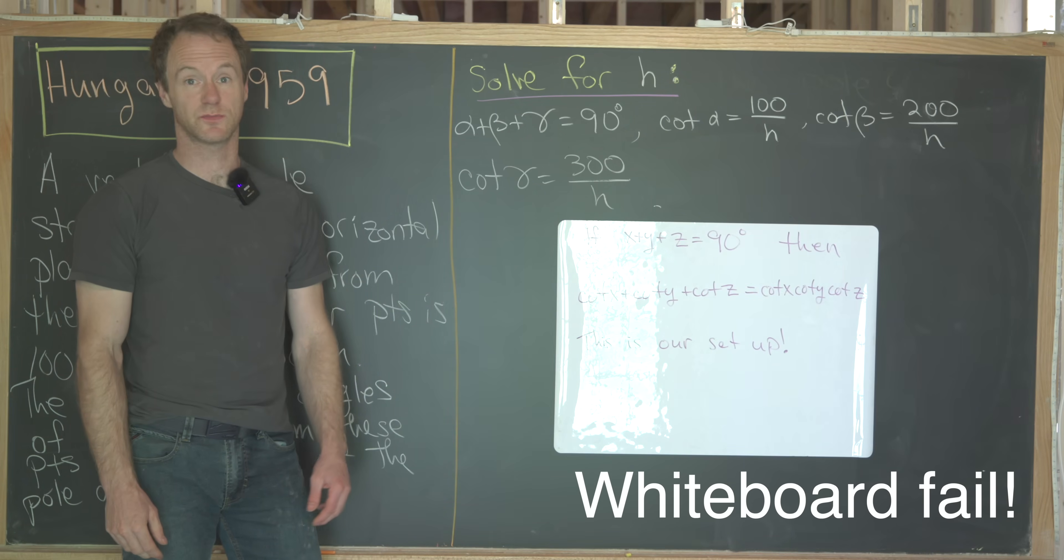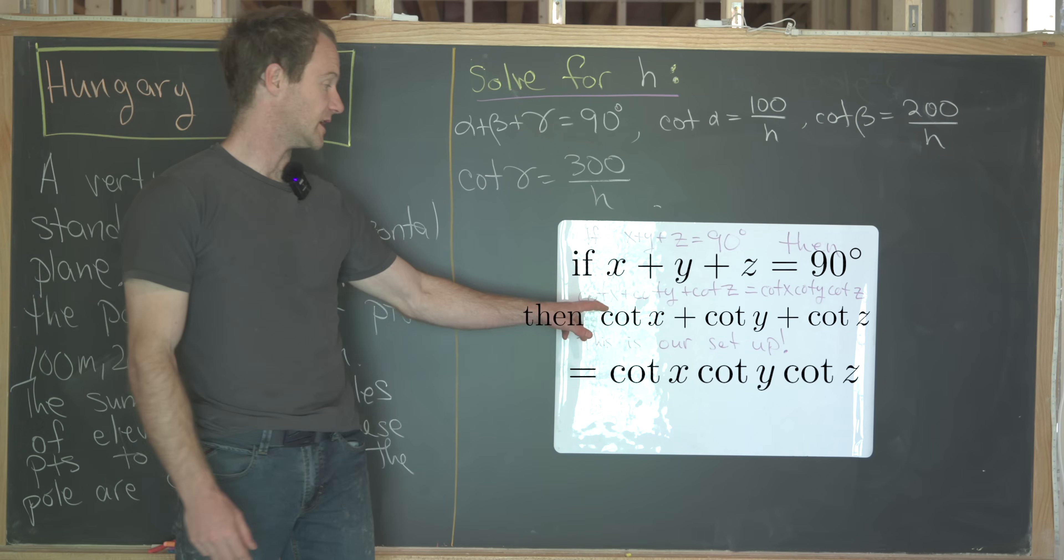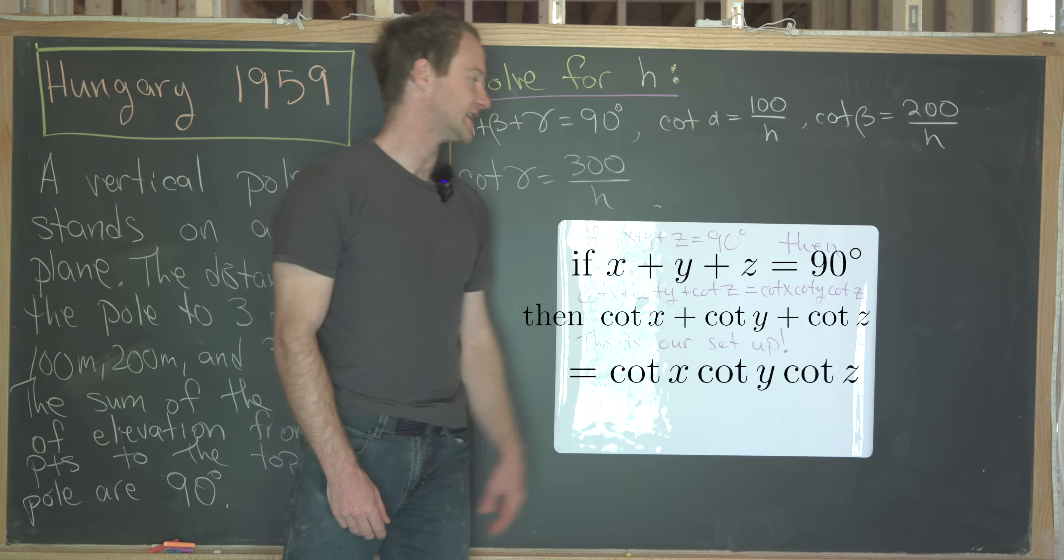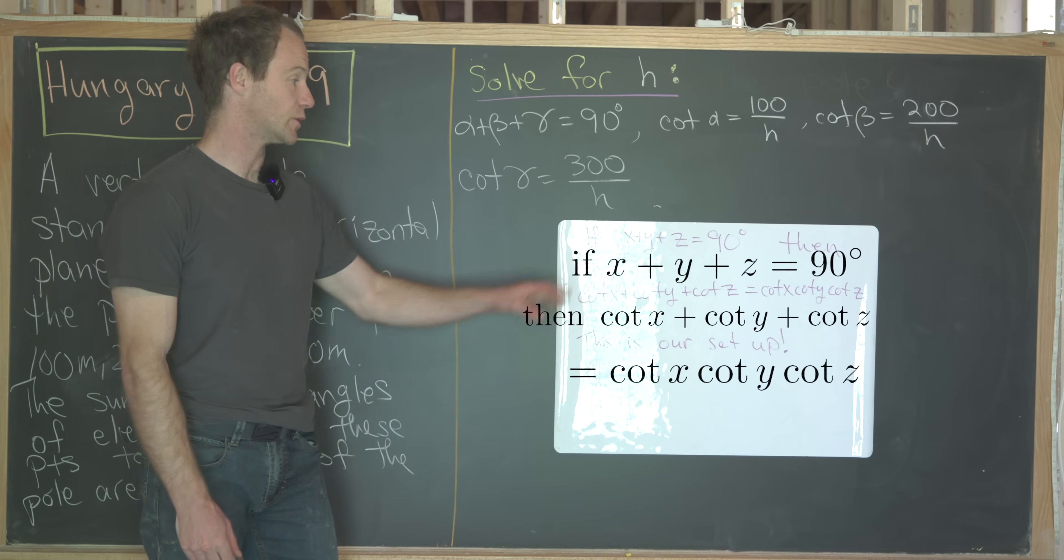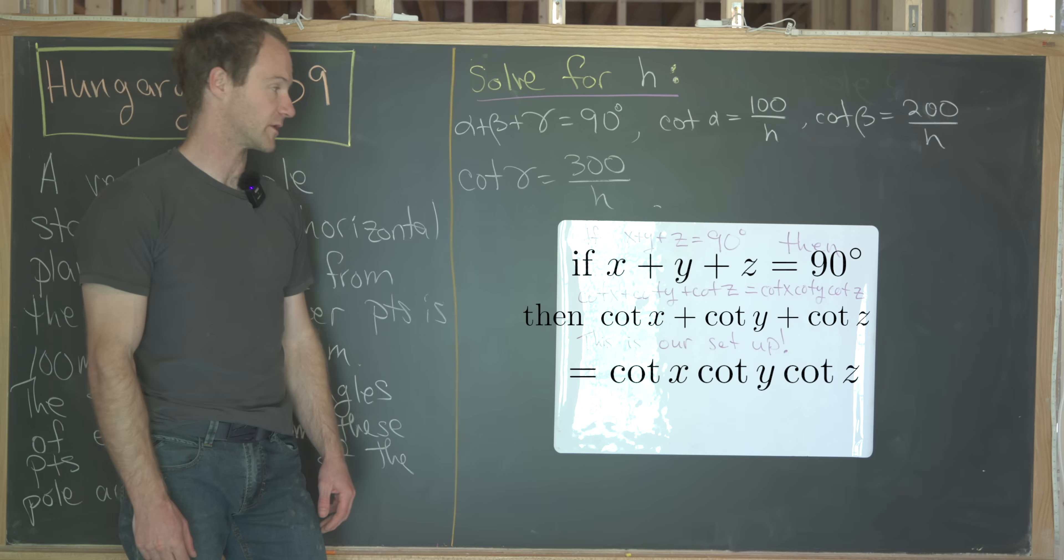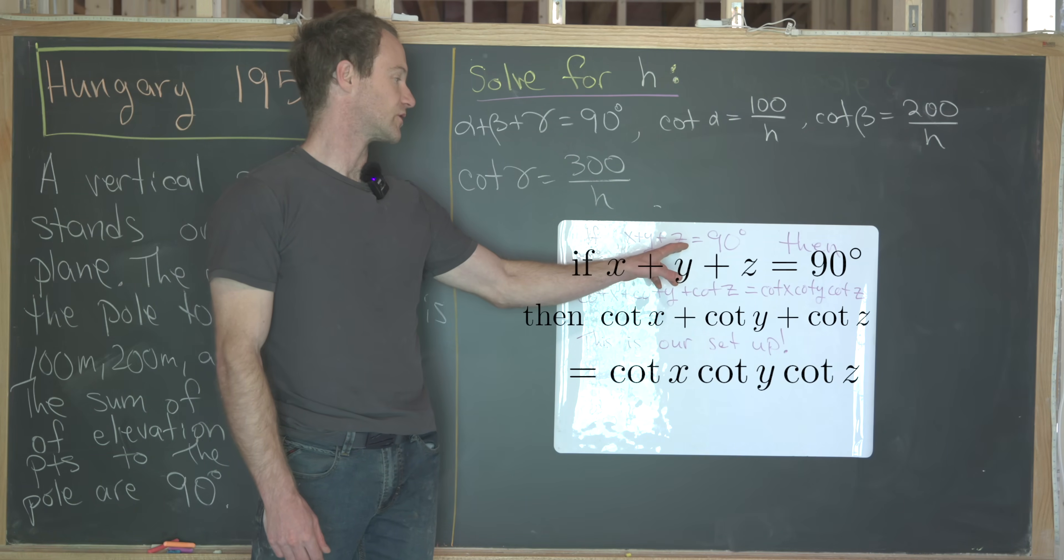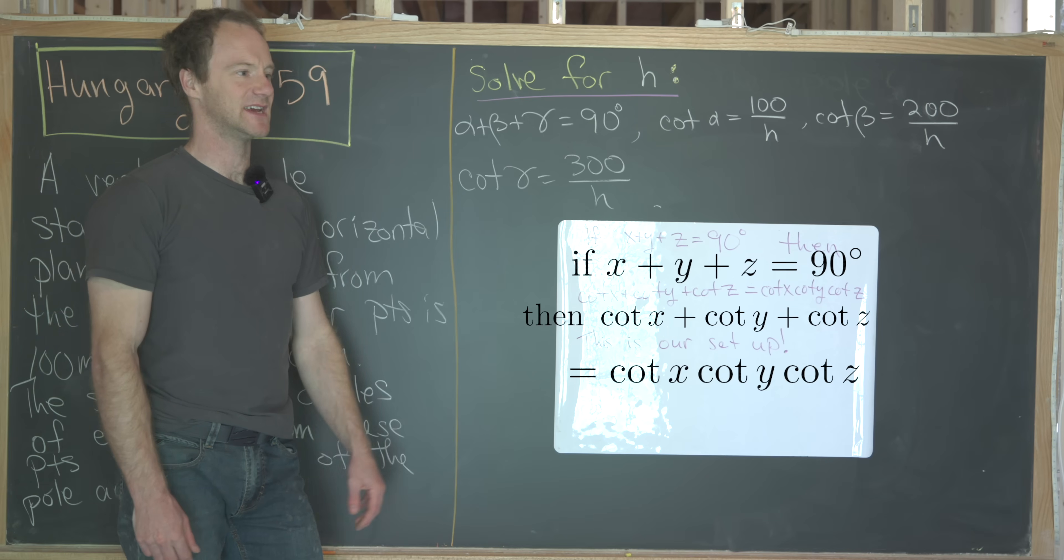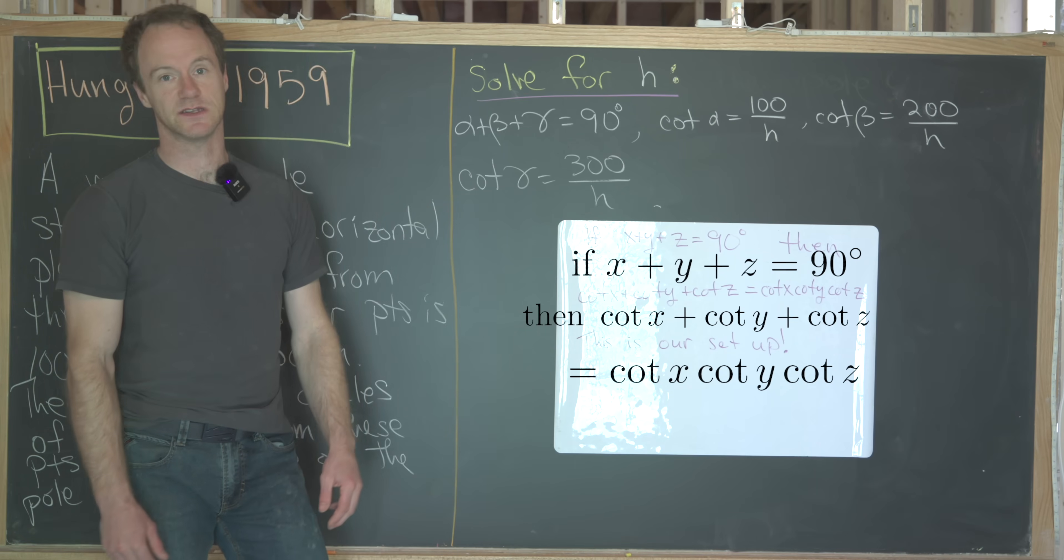Here's the cotangent triple angle identity. If x plus y plus z equals 90 degrees, then cotangent of x plus cotangent of y plus cotangent of z equals cotangent of x times cotangent of y times cotangent of z. Notice that this is our setup so we can nicely use this formula. Now how would you prove this? I think the best way would be to write z as 90 minus x plus y and then use the standard sum angle formula for cotangent, which can easily be derived. And then moving things around, you'll get this equation pretty easily.